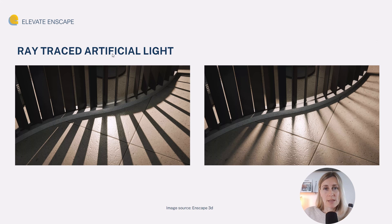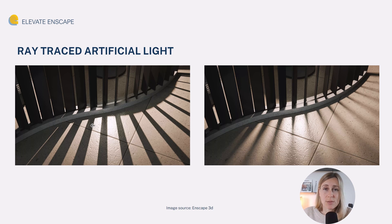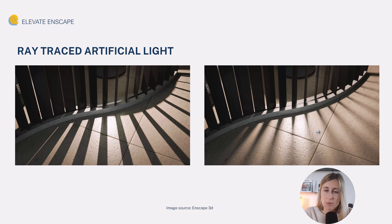Another cool feature is ray traced artificial light — though note this has been introduced only for Windows users, not Mac yet. Previously, when light sources were too close to each other, it would create irregular edges and missing shadows. With the new ray traced artificial light, that is no longer the case. You get the most crisp and accurate shadows, with really nice sharp variations of light. For scenes illuminated with large light sources, you can now get very soft shadows, allowing a more accurate representation of how light behaves in real life.